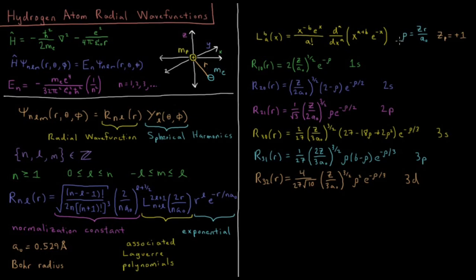We're going to define a convenient quantity to work in terms of here. We're going to define the quantity rho. Rho equals zr over a0. a0, once again, is the Bohr radius. z is the charge of whatever our atom is in units of how many protons. z of a proton equals plus one.